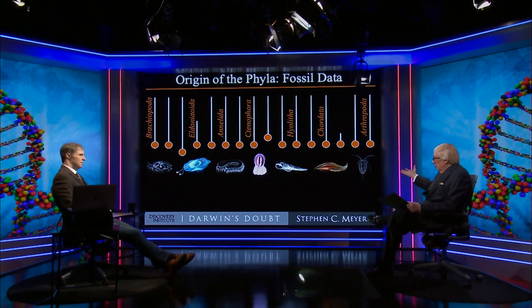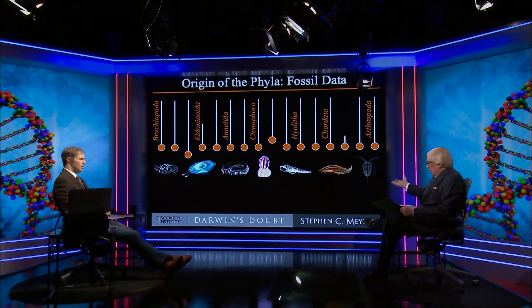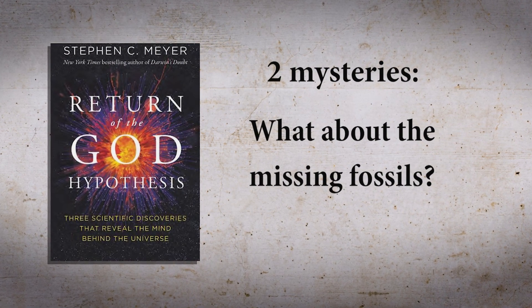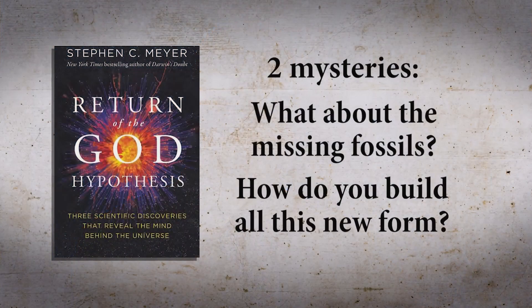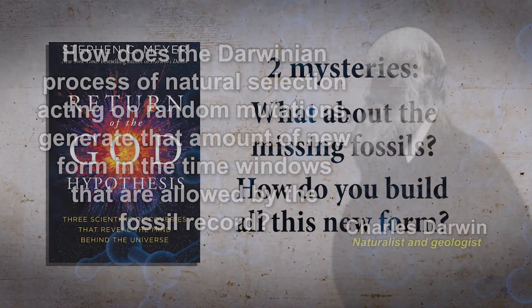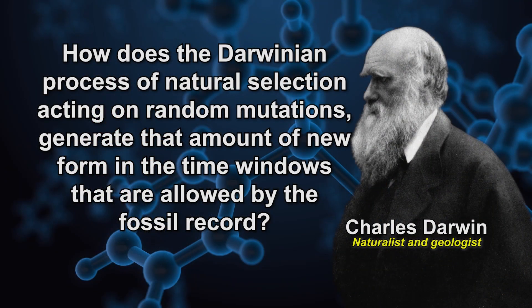What was the problem that the paleontologists suddenly realized? In my book, I talk about two mysteries: the mystery of the missing fossils, but there's a deeper problem that the Cambrian explosion and other similar explosions in the history of life raise. How do you build all this new form? It's an engineering problem — how does the Darwinian process of natural selection acting on random mutations generate that amount of new form in the time windows allowed by the fossil record?